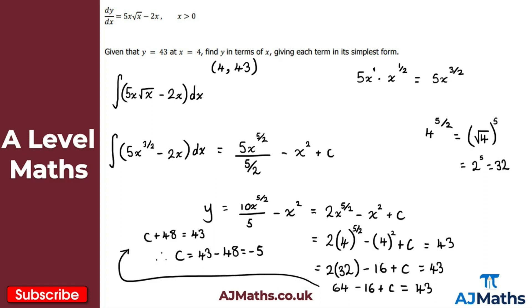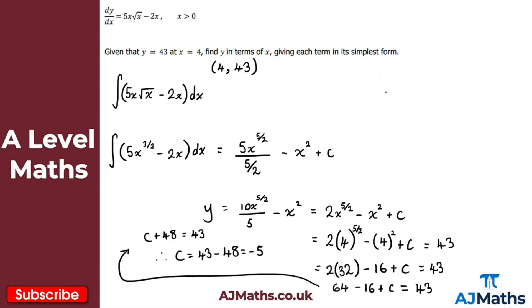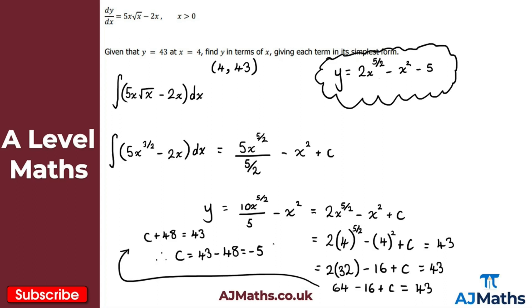So all we need to do now is give y in terms of x with our value of c. Therefore, y equals 2x to the power of 5 over 2 minus x squared minus 5. We simplified 10x to the 5 over 2 over 5 to 2x to the 5 over 2 to put it in simplest form. That's our solution, and that brings us to the end of this video on finding functions. In the next video, we're going to look at finding areas using integration.